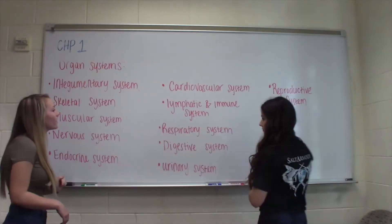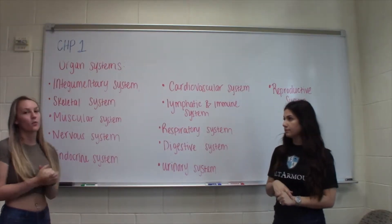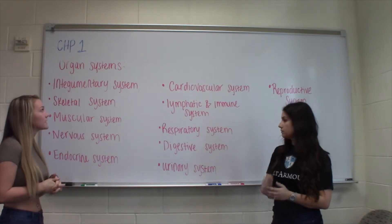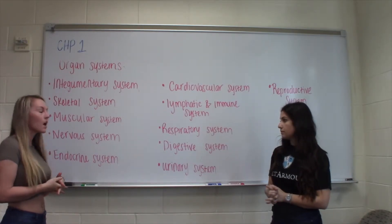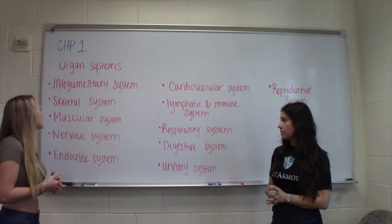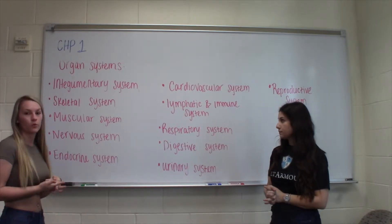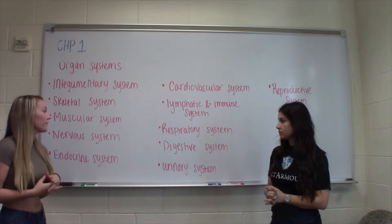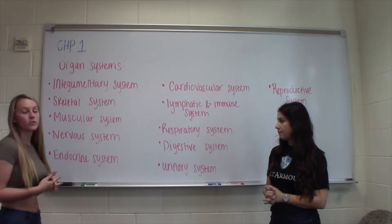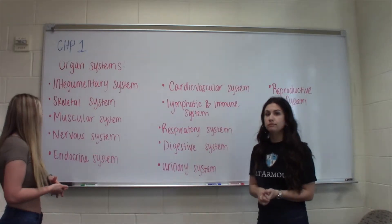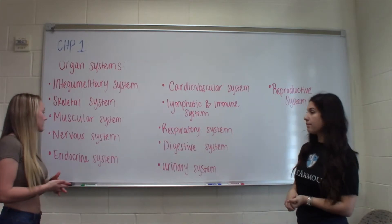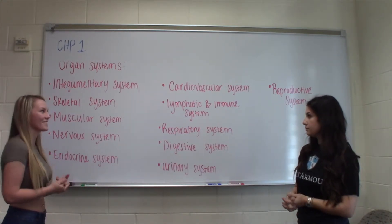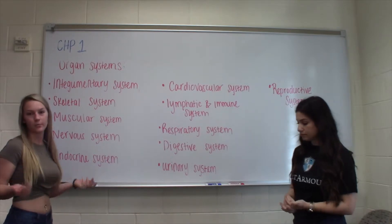This is a breakdown of the organ systems. You have the integumentary system, which is the skin — it protects from abrasion. The skeletal system provides support for your body. The muscular system contracts to provide movement. The nervous system stores information, and the endocrine system produces hormones. Then there's the cardiovascular system, which circulates your blood.